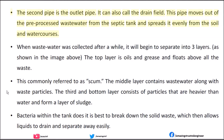The second pipe is the outlet pipe, also called the drain field. This pipe moves pre-processed wastewater out of the septic tank and spreads it evenly into the soil and water courses. When wastewater is collected after a while, it will begin to separate into three layers. The top layer is oils and grease and floats above all the waste — this is commonly referred to as scum. The middle layer contains wastewater along with waste particles.